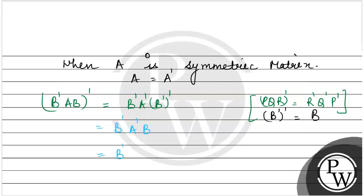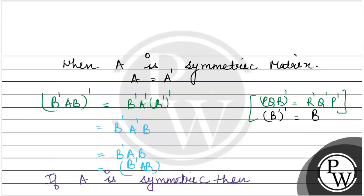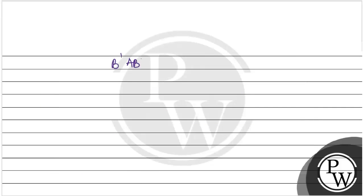This equals B' — and since we know that A transpose equals A (because A is symmetric), we can write it as A. So this equals B'AB, which means the transpose of B'AB equals B'AB itself. Therefore, if A is symmetric, then B'AB is also symmetric.